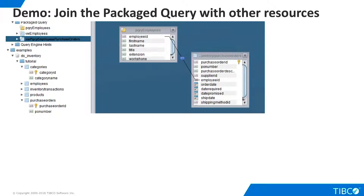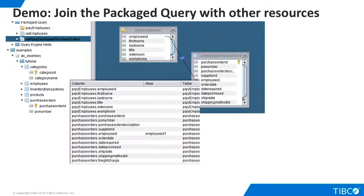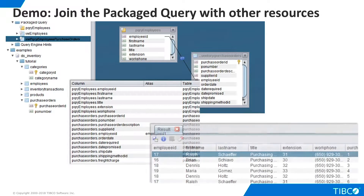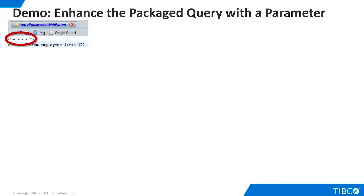Once our Packaged Query is in place, we can join the data with other TDV resources. Here, we create a new view that joins the Packaged Query with a Purchase Orders table. We create a projection on the Grid panel and execute the new view to see our federated results.